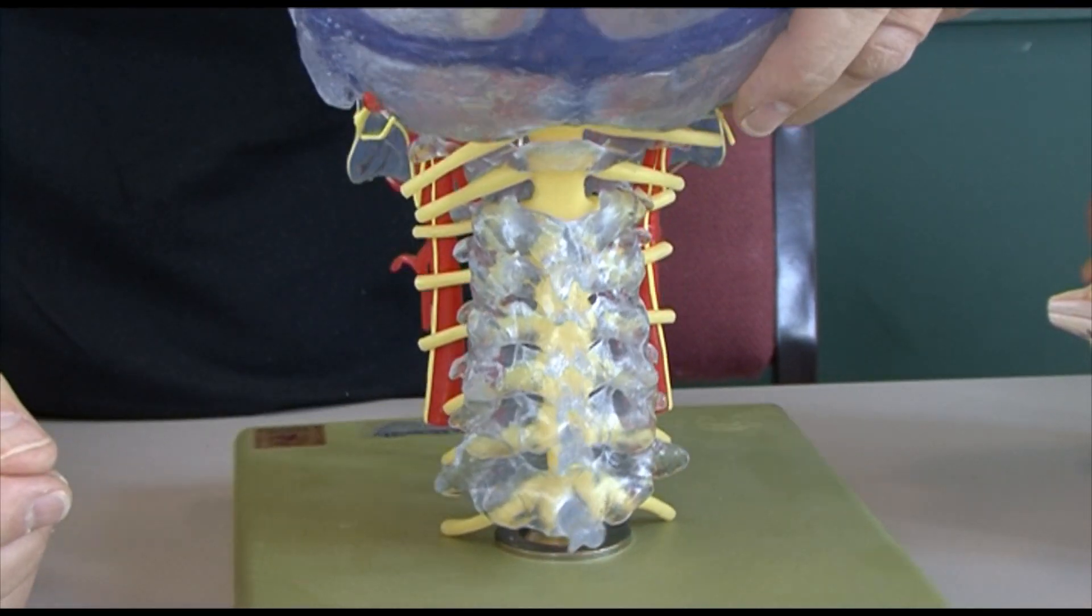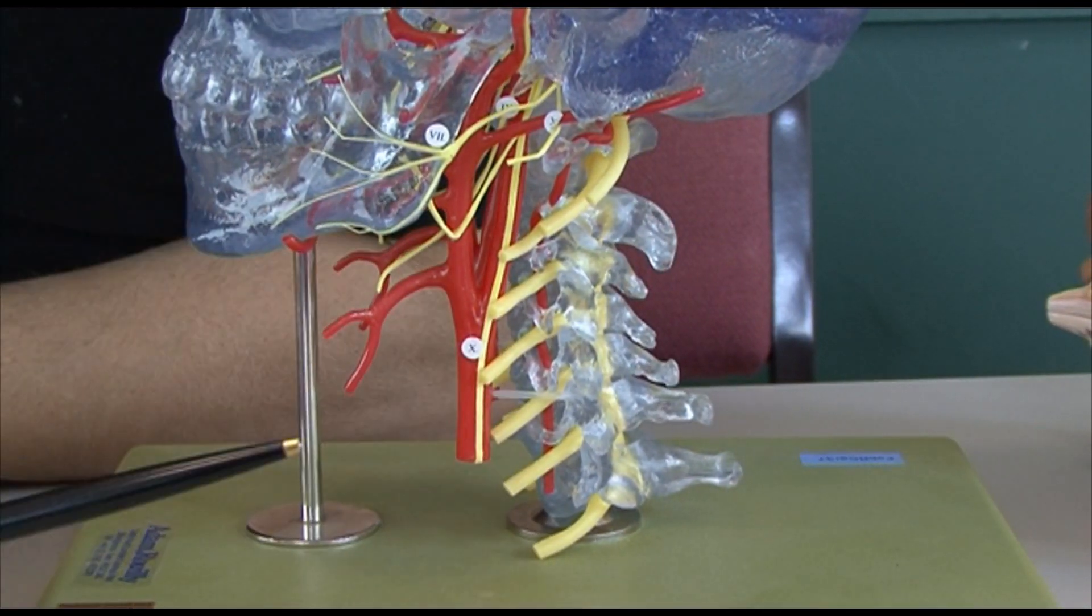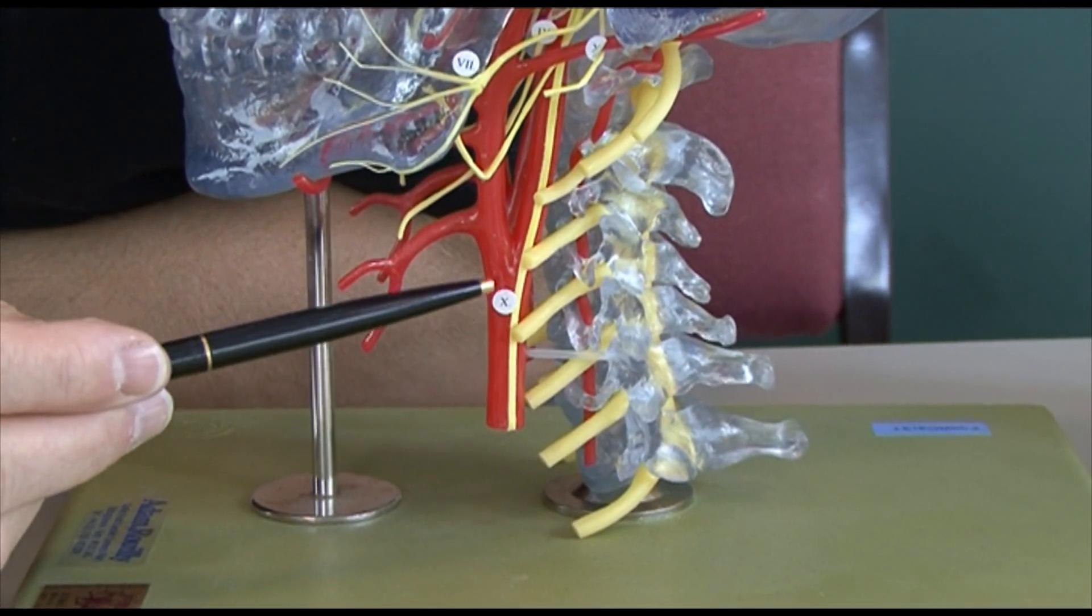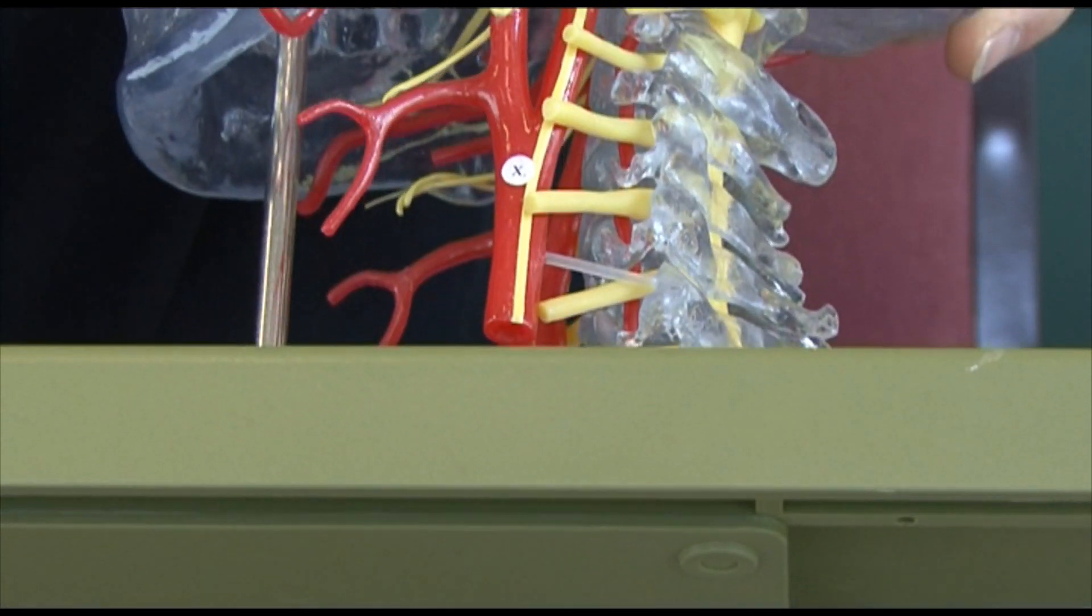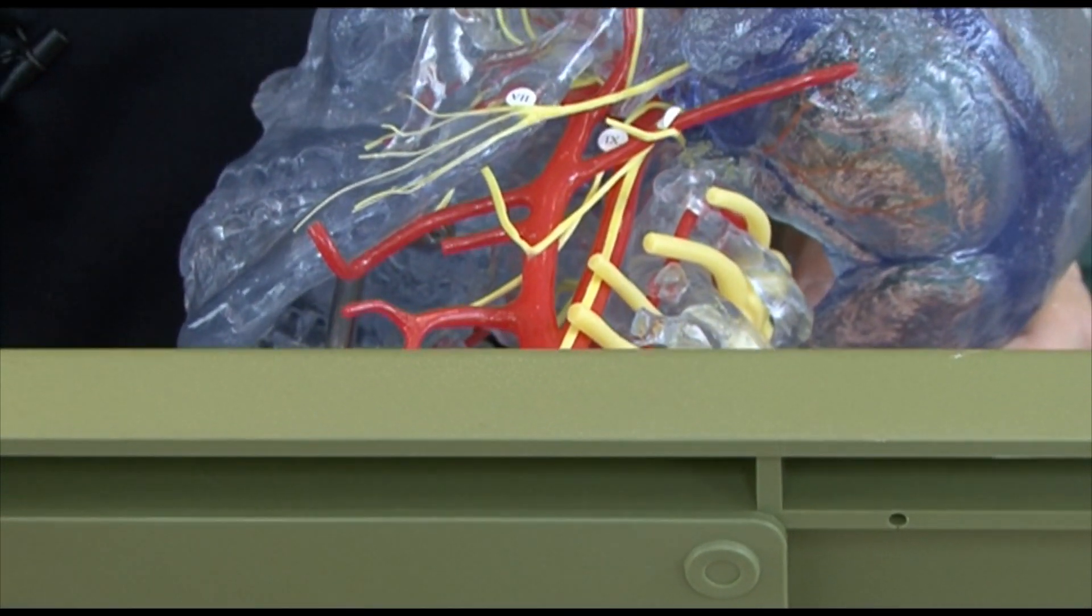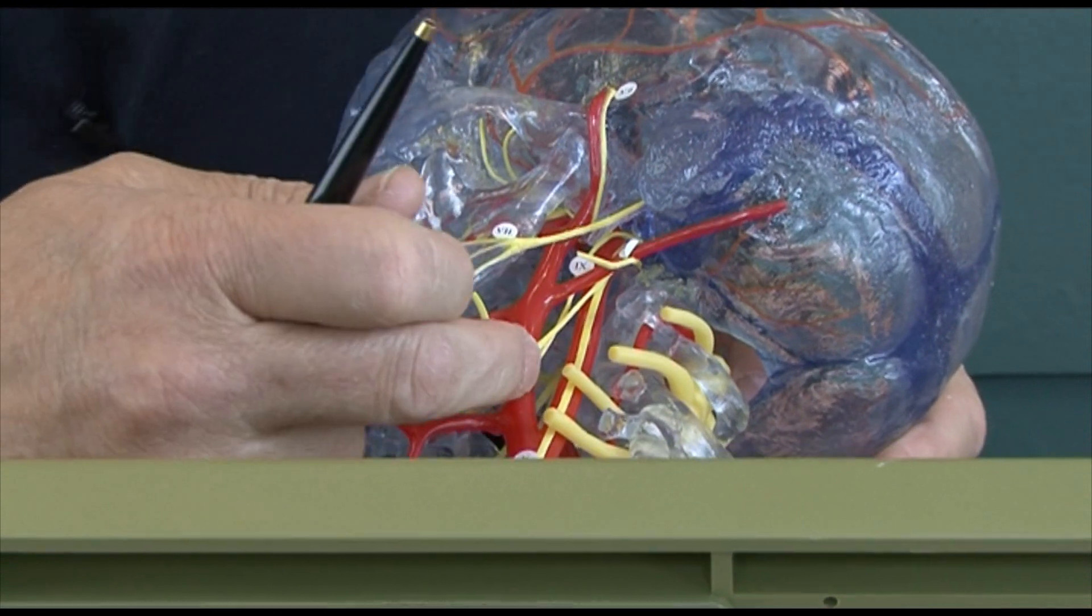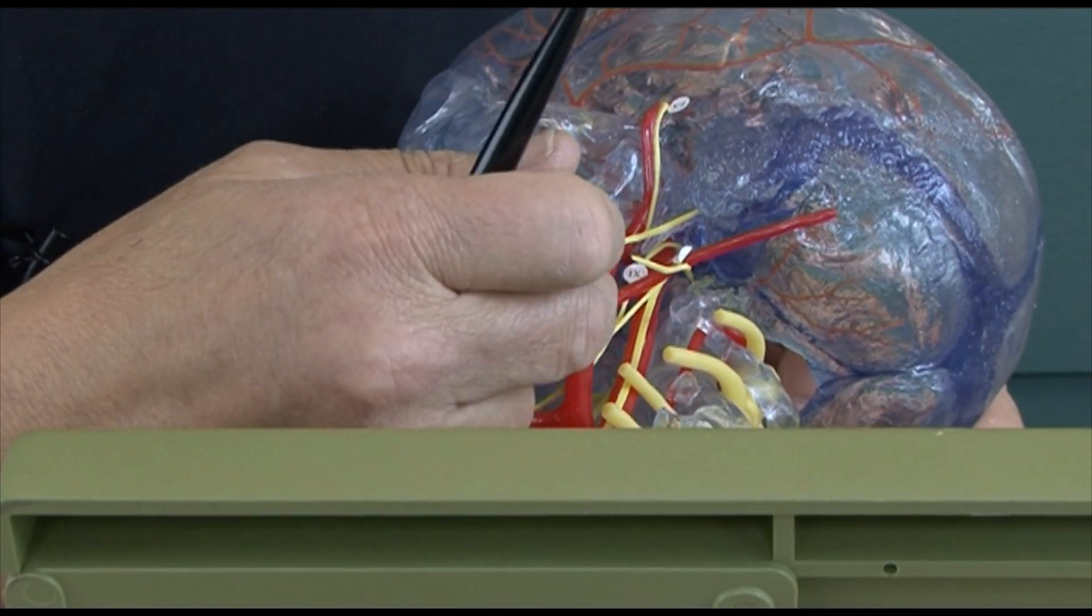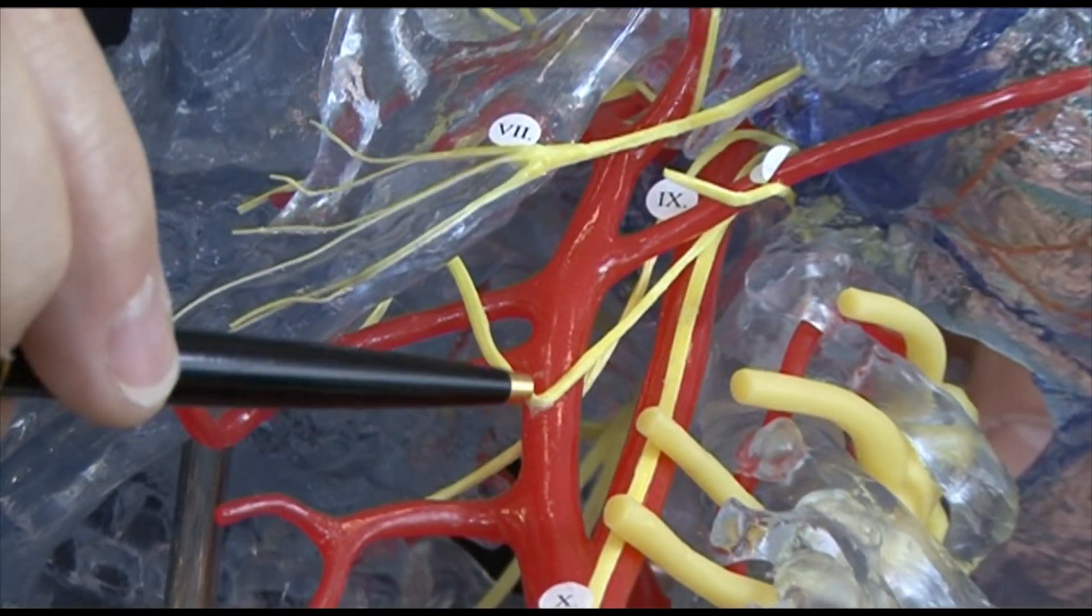Looking at the side of this model, we see the carotid artery taking blood towards the brain. This is the internal carotid artery here, taking blood up to the circle of Willis.